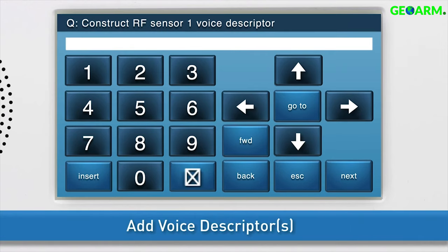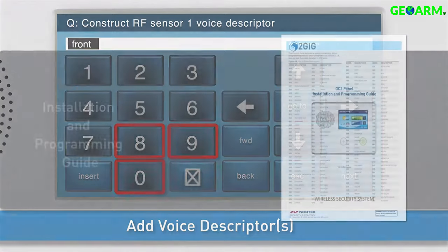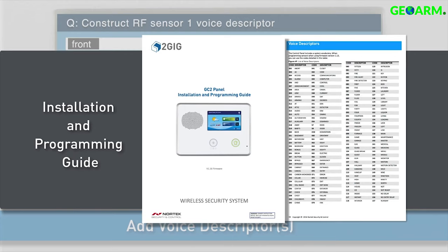Next, add the voice descriptors. Press insert. The word abort will automatically appear in the answer box. Change the word by either using the right and left arrow buttons, or by typing the word's three-digit code using the keyboard. For a list of all voice descriptors and their associated codes, see the installation and programming guide.